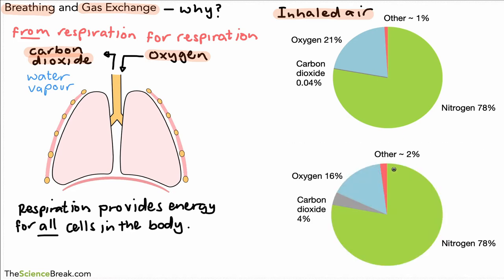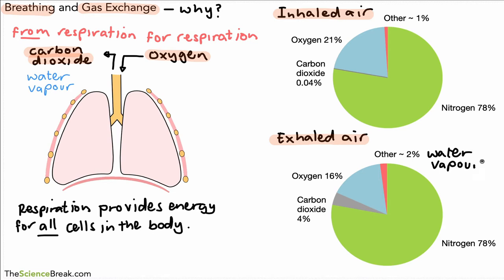Once that air has been in the body and is breathed out again, this is what we find in the exhaled air. Oxygen is now 16% — before it was 21%. Carbon dioxide has gone up quite a lot to 4%. However, nitrogen stays the same at 78%. There is an increase in other gases from 1% to about 2%, mainly because exhaled air contains more water vapor than the air we breathe in.